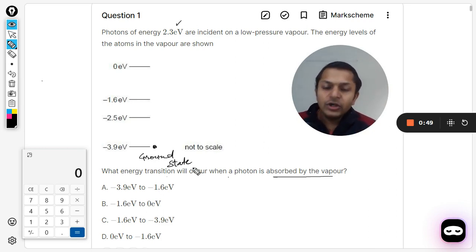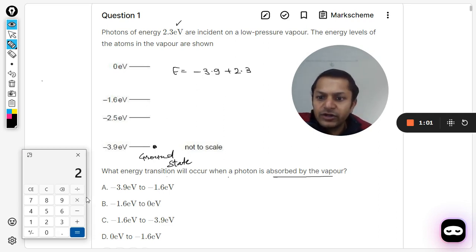So energy is negative 3.9 eV and 2.3 is absorbed. So what is the total energy now? Negative 3.9 plus 2.3, so I can say 2.3 minus 3.9. Calculator is in front of me, 2.3 minus 3.9, and the answer is negative 1.6. So clearly it is going to this.